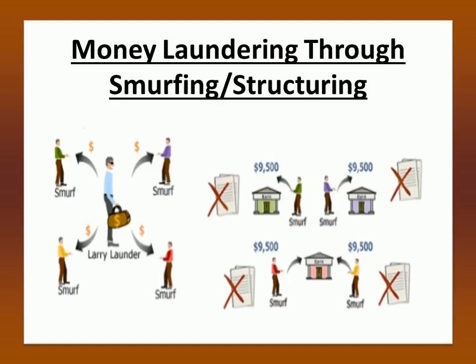Let us start with smurfing and structuring. Money laundering through smurfing is a method of placement whereby cash is broken into smaller deposits of money, used to defeat suspicion of money laundering and to avoid anti-money laundering reporting requirements. The people involved in such kinds of money laundering are called smurfs. They are aware that if a large dump of cash is deposited in a bank, it comes under the purview of banking surveillance. Hence, they break it into smaller deposits in different regions and different banks to avoid reporting thresholds. Smurfing looks simple but is a complex and time-taking process as each day smurfs deposit small chunks of amounts.